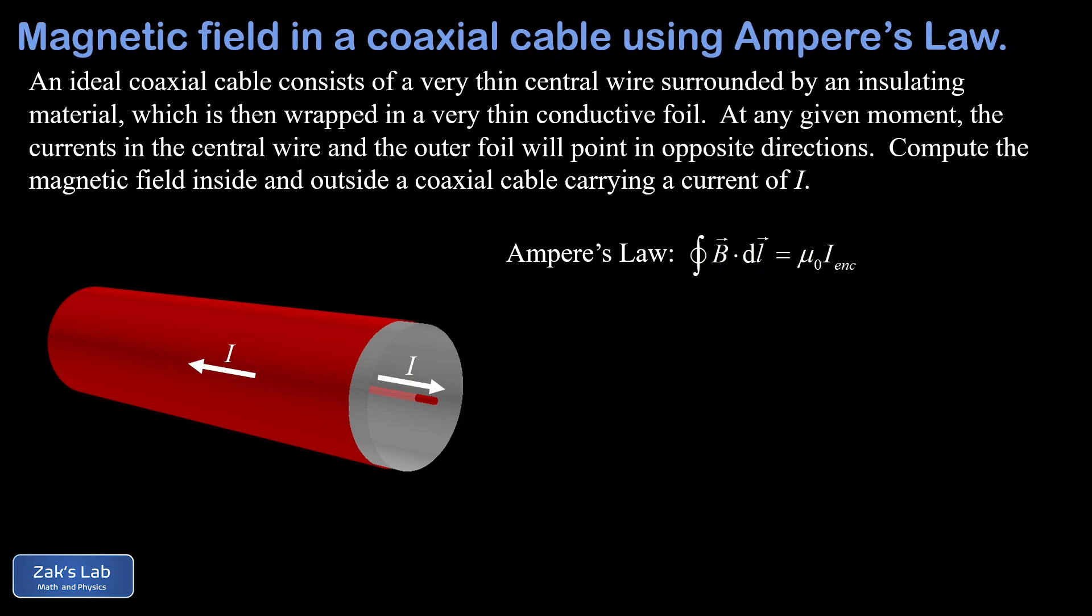Now when we call the cable ideal, we mean the wire at the center is so thin that we aren't concerned with how the field changes within the wire itself. In other words, we treat it as one-dimensional. Also, the foil wrapped around the outside is so thin that its thickness is considered negligible as well, so we aren't concerned about any changes in magnetic field as we traverse the thickness of that foil.